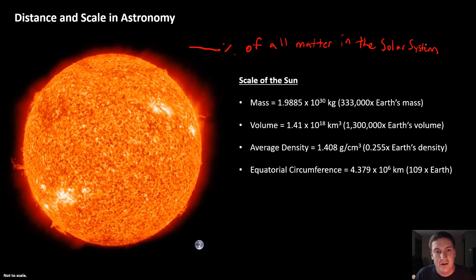Let's compare the scale of the Earth to our local star, the Sun. Now the Sun is truly impressive. The Sun comprises 99% of all of the matter in the solar system. Its mass is 333,000 times that of the Earth. Its volume, 1.3 million times that of the Earth.